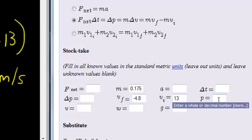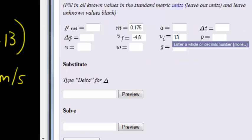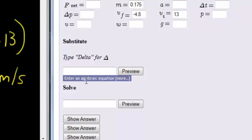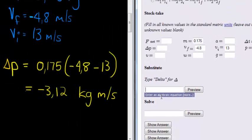Going downwards, and that seems to be it. It's going to substitute into our formula. We must type delta for delta. So we'll type in that delta P is equal to 0.175 times, in our brackets, negative 4.8 minus 13. Preview.